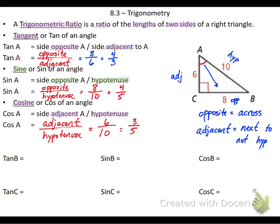I can do the same thing with the next ones, but instead of starting at angle A, I'm starting at angle B. If I'm starting at angle B, I put my angle mark at angle B. 10 is still my hypotenuse. The side that is across from angle B is opposite, and next to is adjacent. Sometimes it's easier to find adjacent first - the angle mark always touches the hypotenuse and the adjacent side, so some people like to label adjacent first and know the other one is opposite.